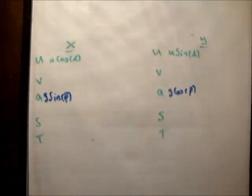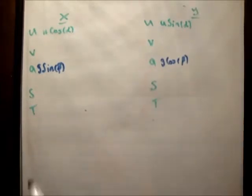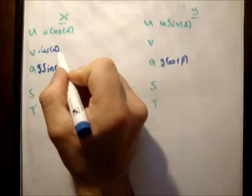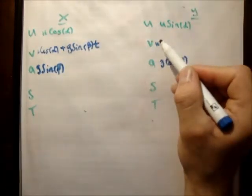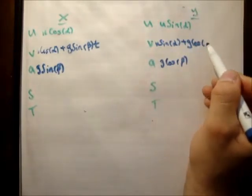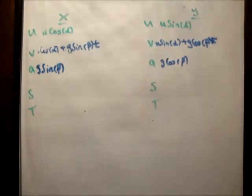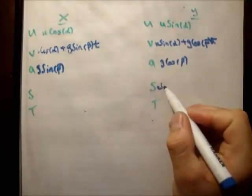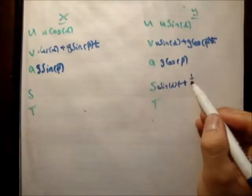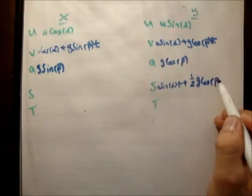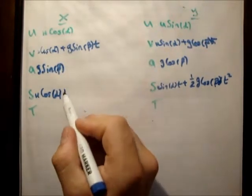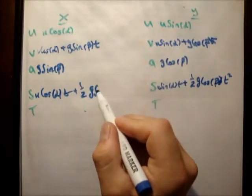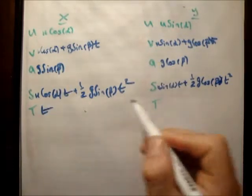So we don't need our sketch anymore. We're going to start analyzing this properly. Using v equals u plus at: in the x prime direction this becomes u cos alpha plus g sin beta times t; and in the y prime direction it becomes u sin alpha plus g cos beta times t. Using s equals ut plus a half at squared: in the y prime direction we get u sin alpha t plus one half g cos beta t squared; and in the x prime direction we get u cos alpha t plus one half g sin beta t squared.